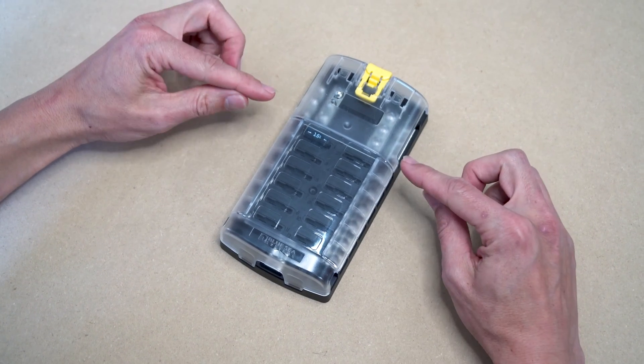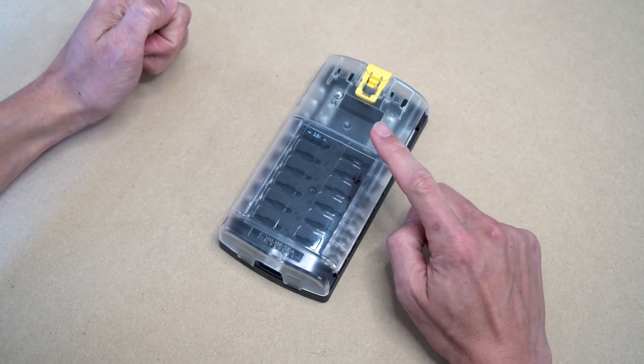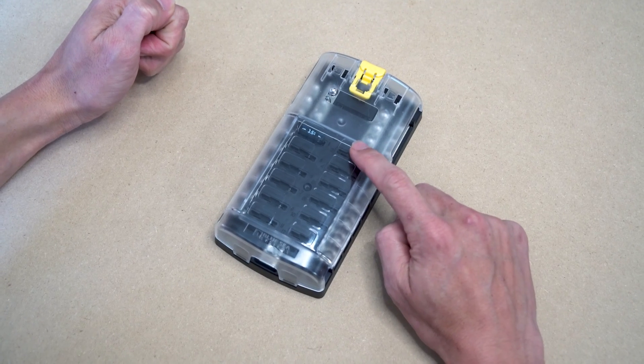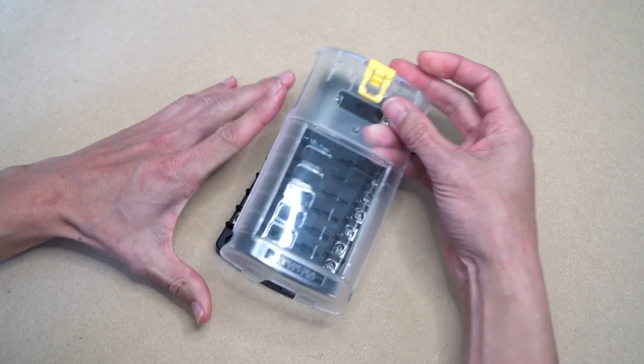This is what the fuse panel looks like when you first receive it. It comes with a nice hard plastic cover that you can remove by pushing the yellow button at the top.